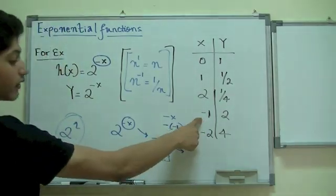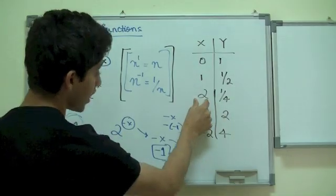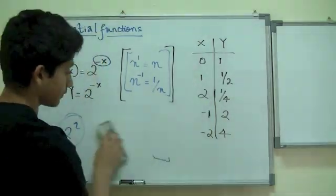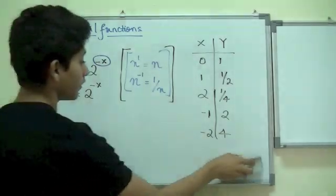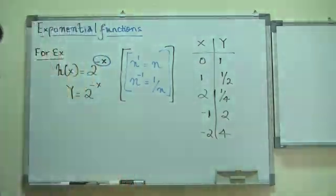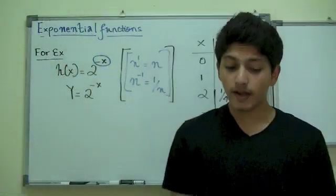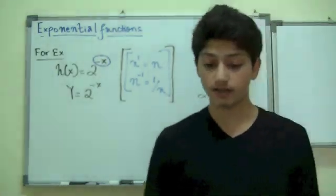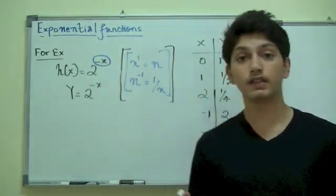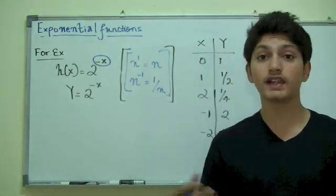That is the reason when you plug in negative integers, you get positive values. And, when you plug in positive, you get negative integers. Just wanted to clear that thing out. So, if you're still confused on it, you can replay this video.